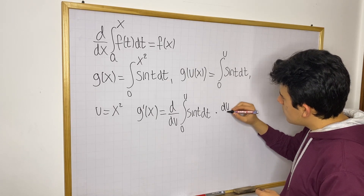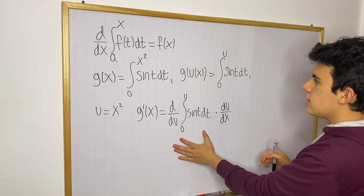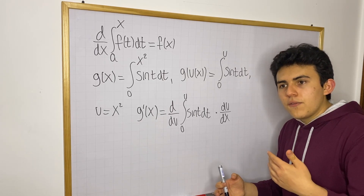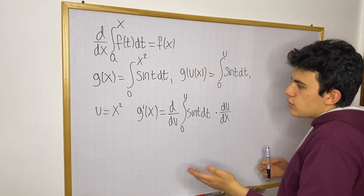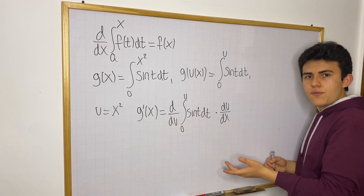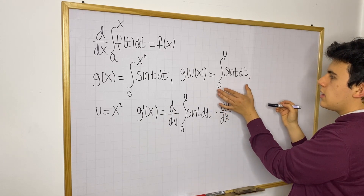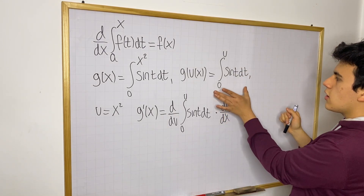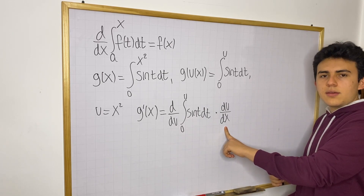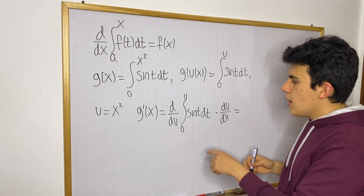This is the chain rule here. The outside function is the integral from 0 to u with u as input, and the inner function is x². We take the derivative of the outside function and then multiply by the derivative of the inside function. This product is very easy to compute.